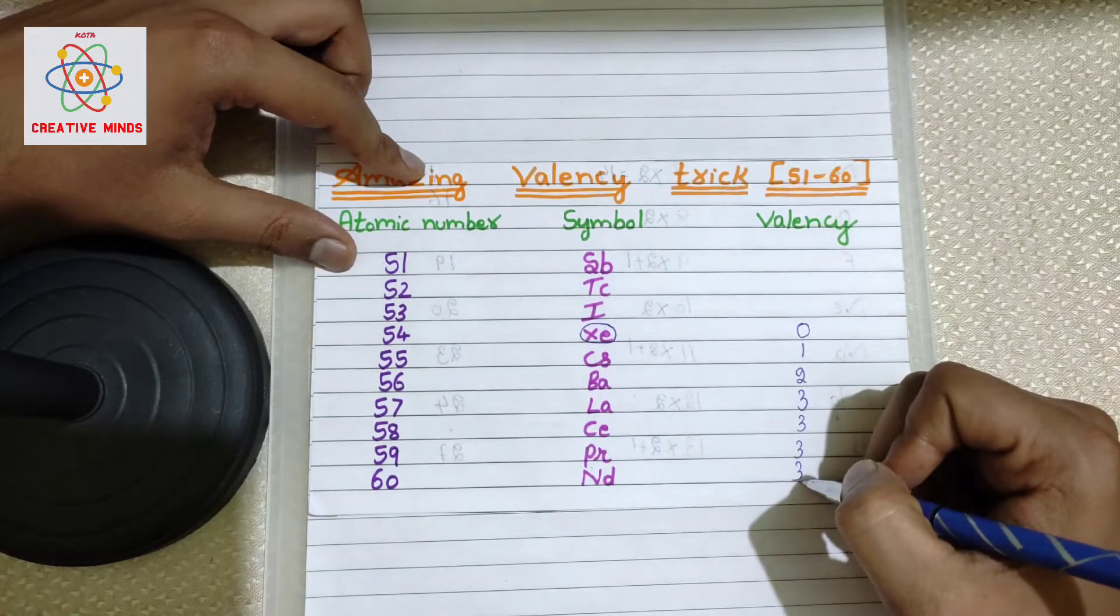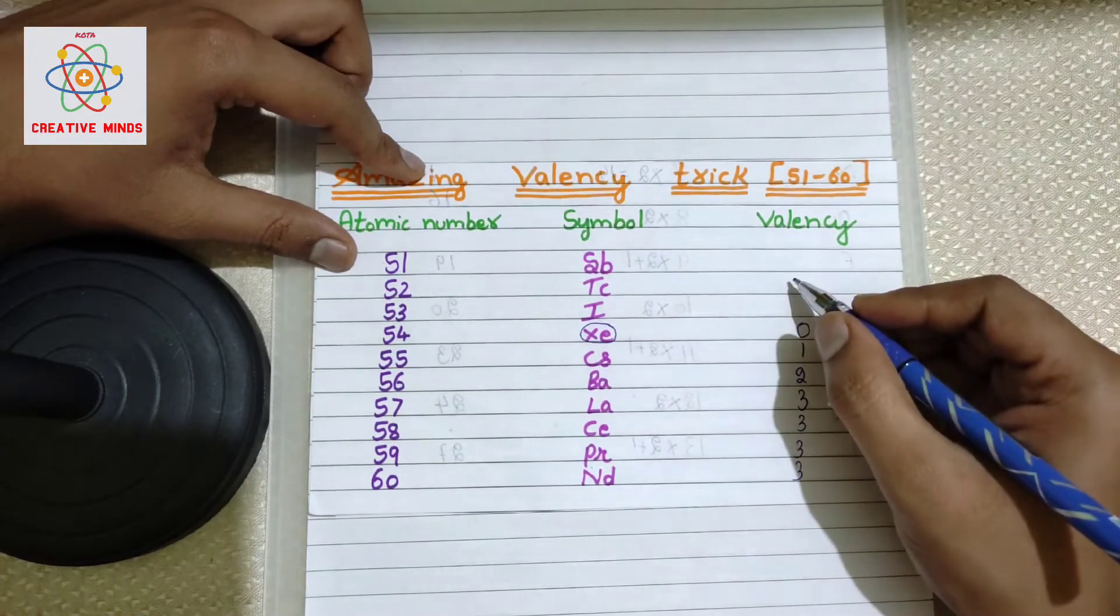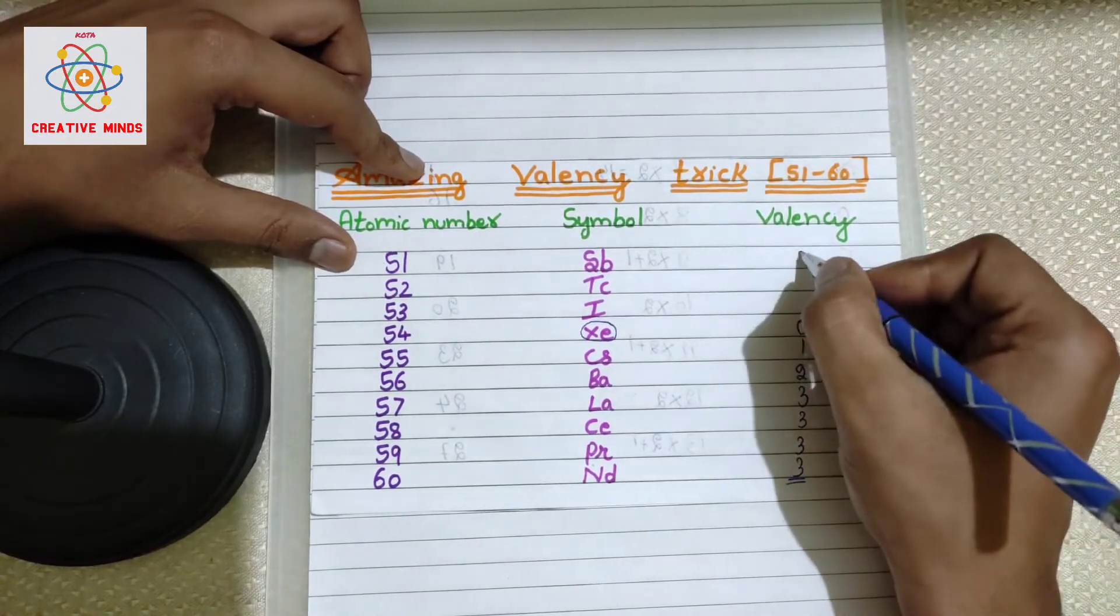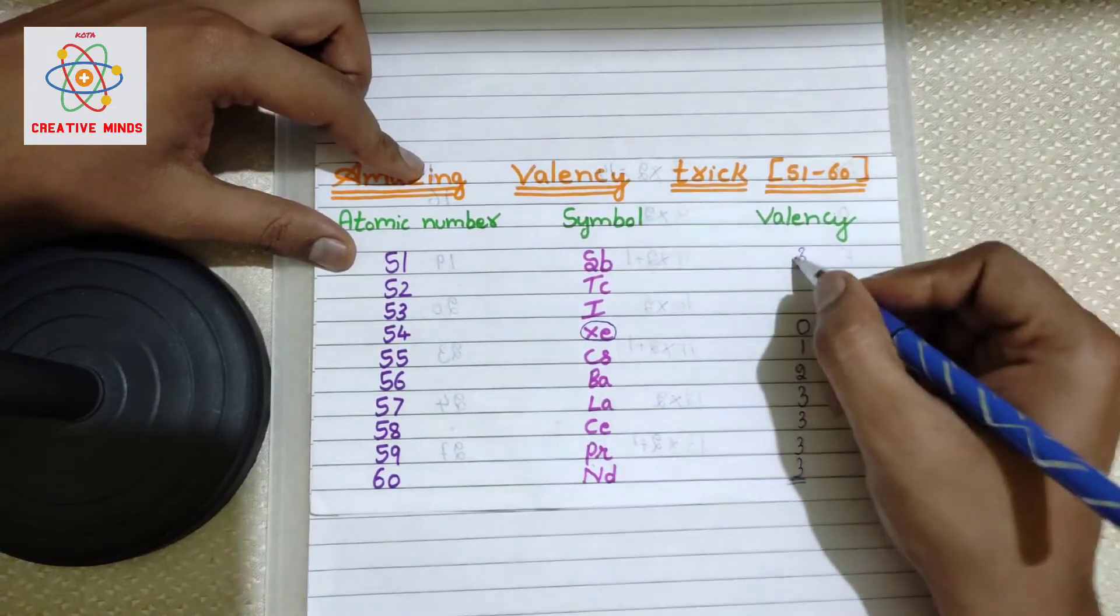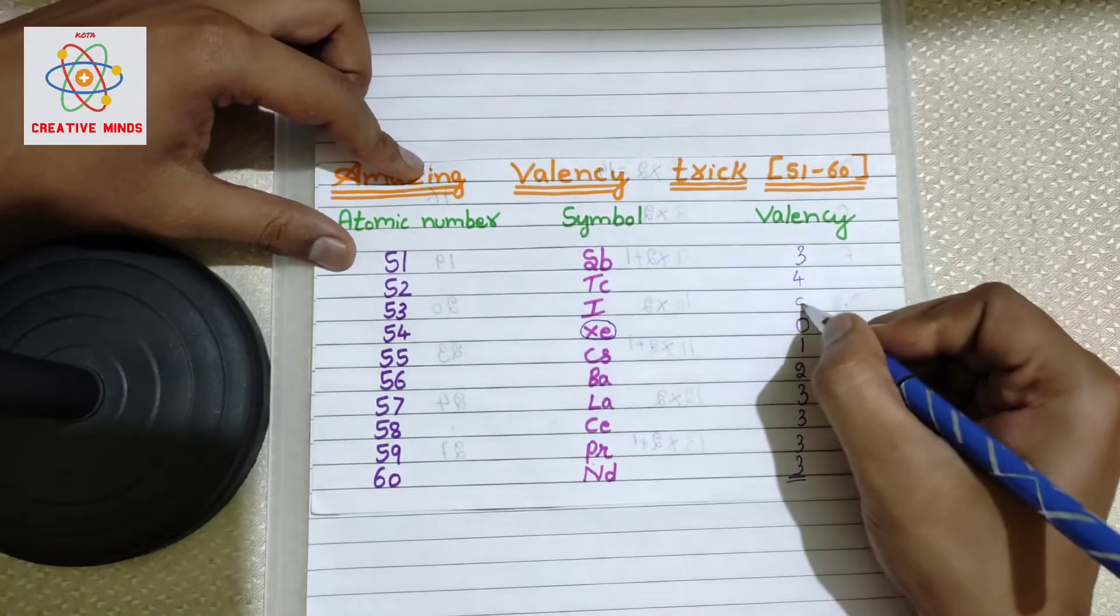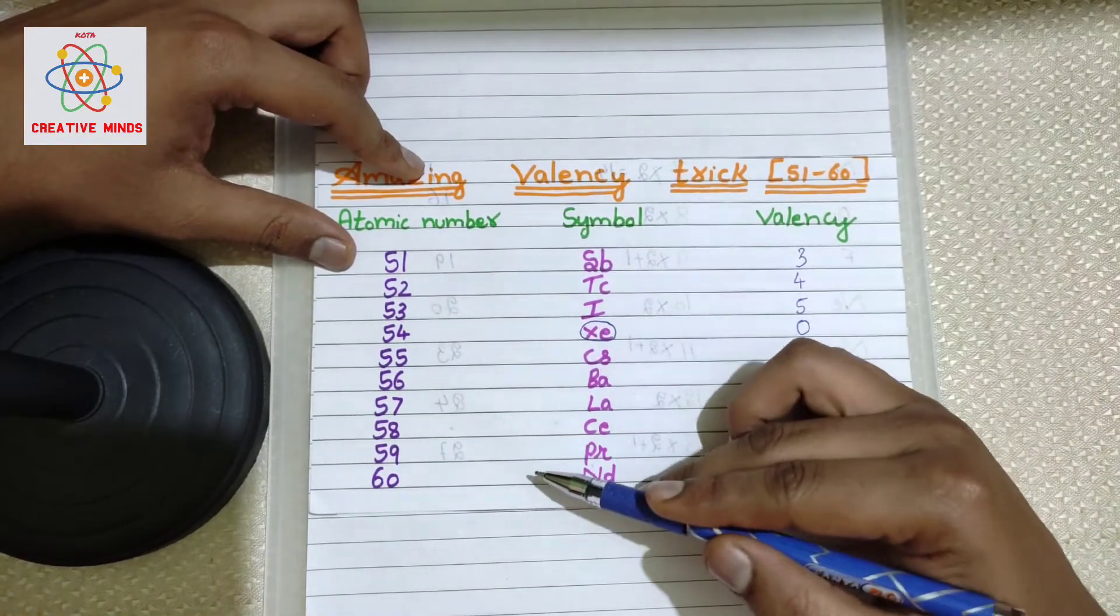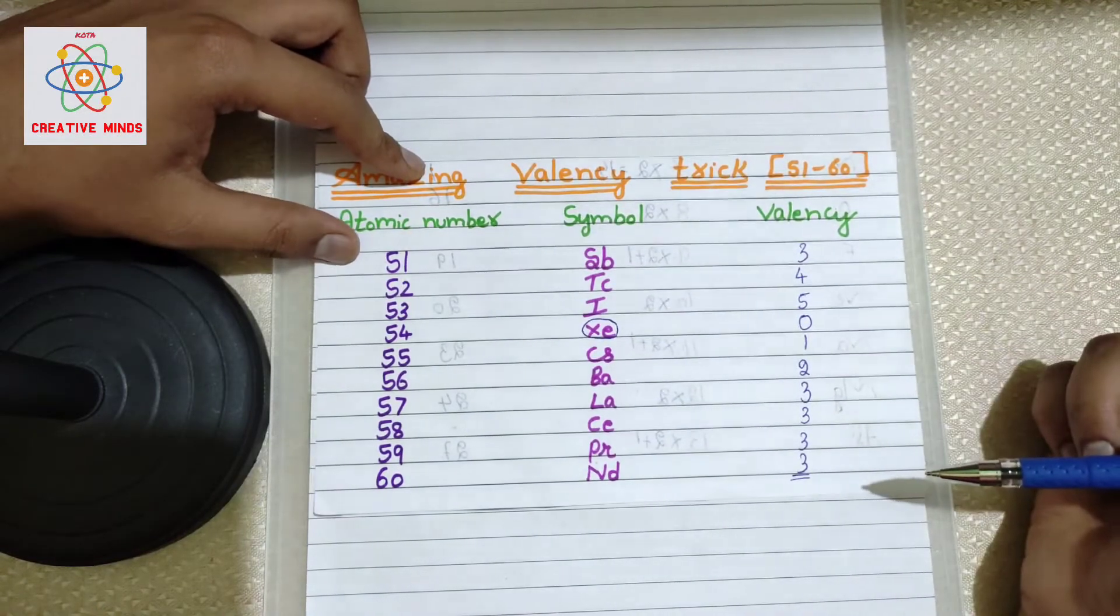Now these many elements we have completed. Next, let us focus on 51. See here, with which number we have ended? Three, right? So let's start with three itself. Three, next proceed further: three plus four equals four, and five. That's all. You got your valences from 51 to 60.